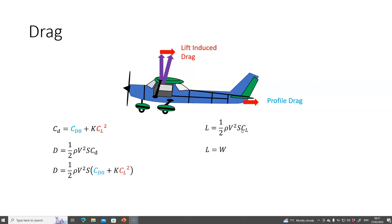Lift is also equal to half rho v squared S coefficient of lift. In steady state flight, lift equals weight, so weight equals half rho v squared S coefficient of lift. If we rearrange that, we can get a value for the coefficient of lift, and then if I square that, I have a value for the coefficient of lift squared.